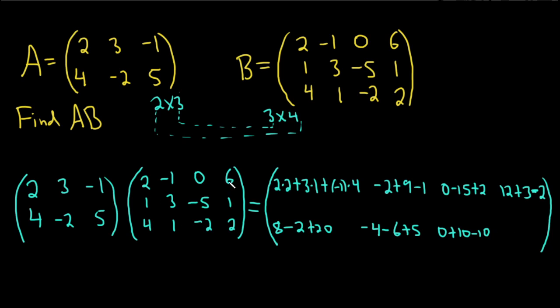And now the second row, fourth column. We use the second row and the fourth column: 4 times 6 is 24 — this is a long problem — negative 2 times 1 is negative 2, and 5 times 2 is 10. Once you get the pattern down, you'll be able to do it.